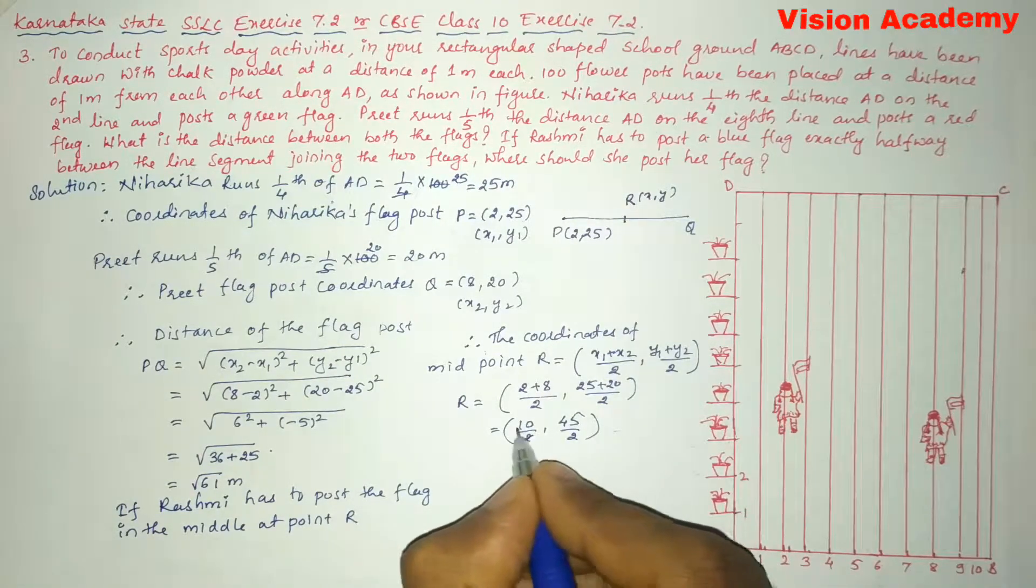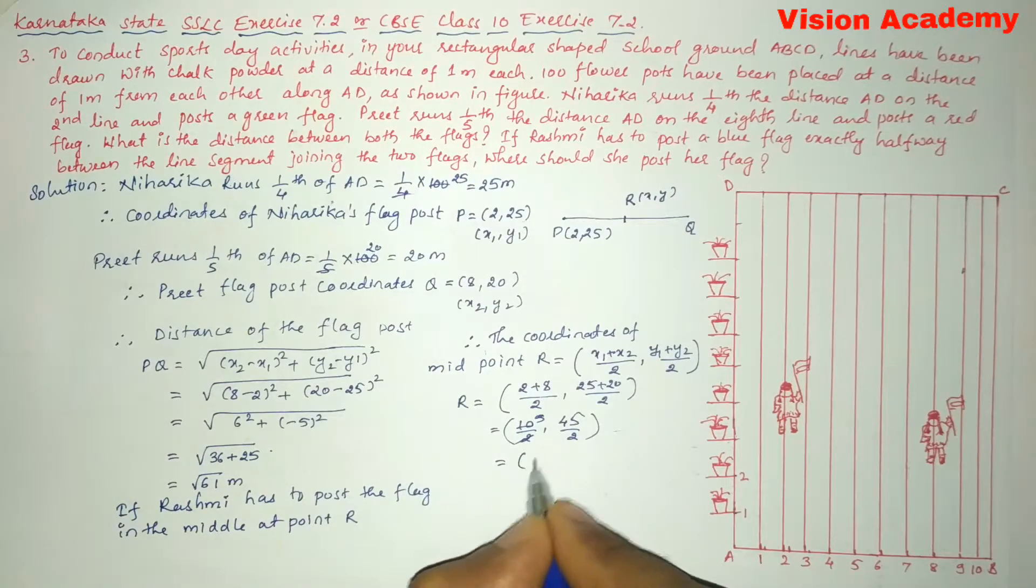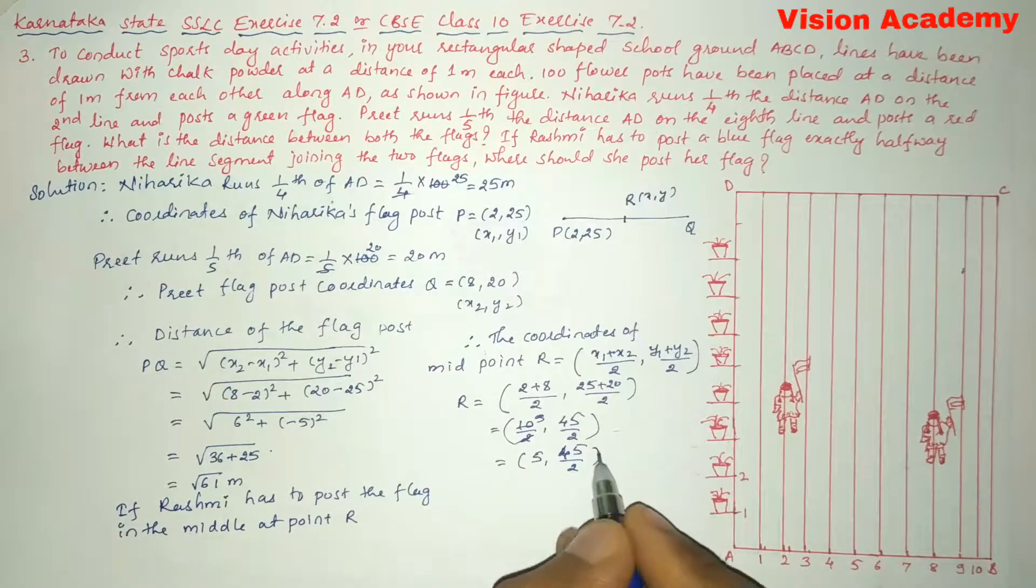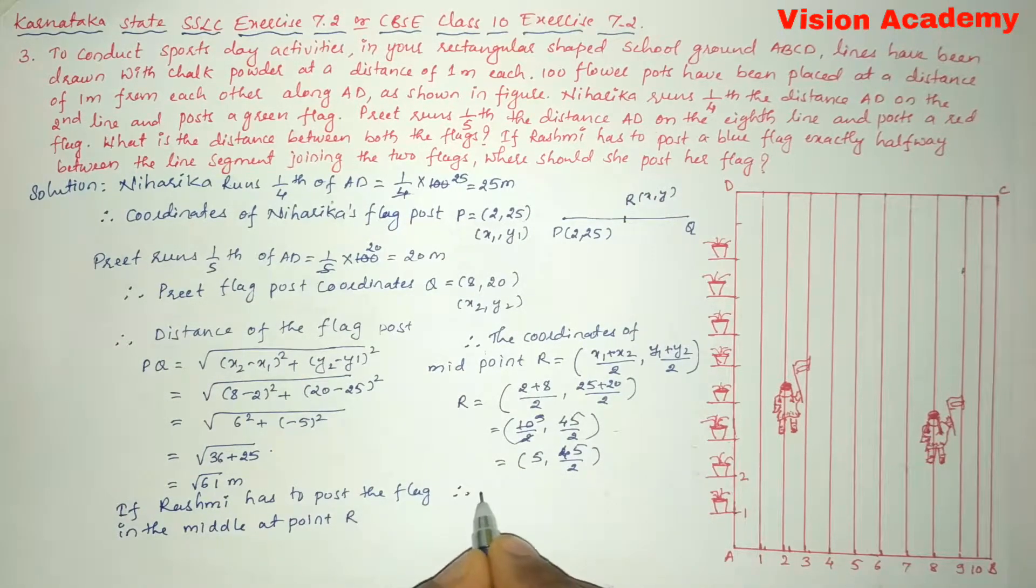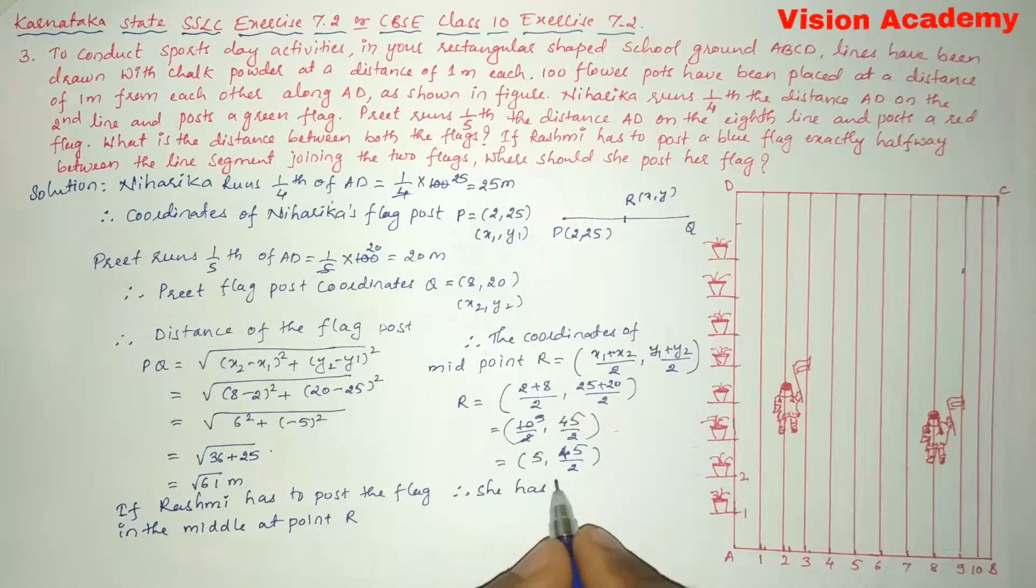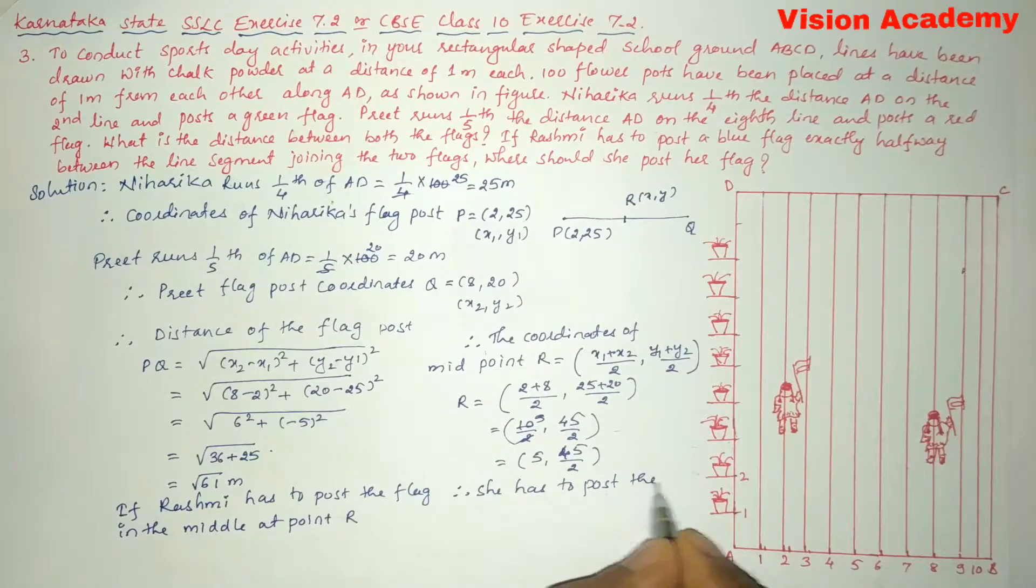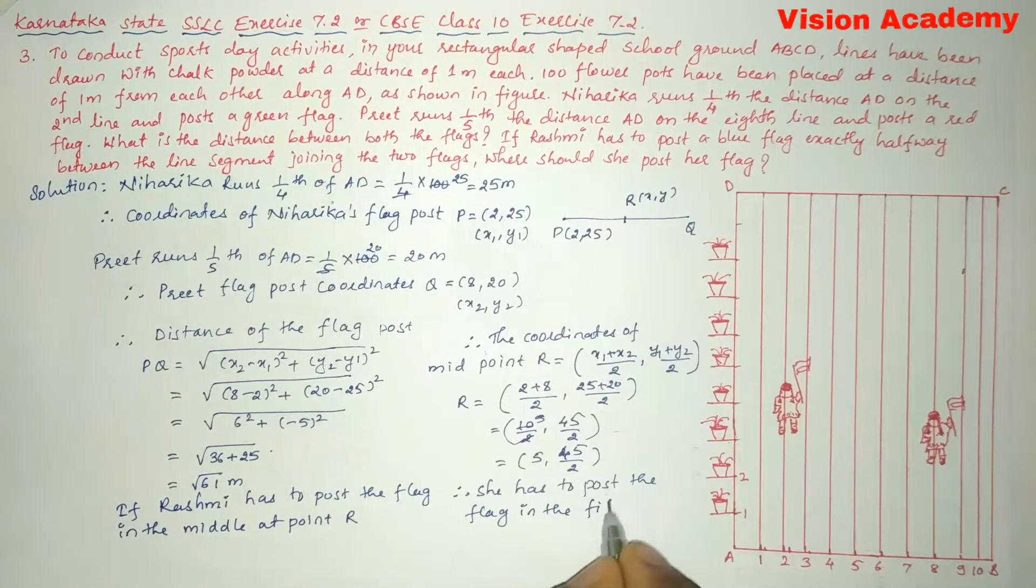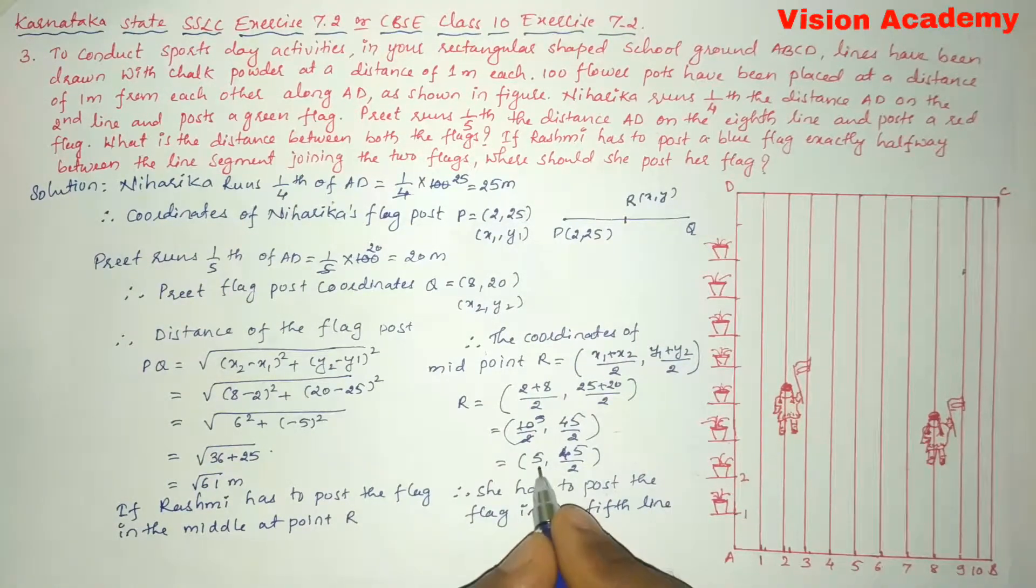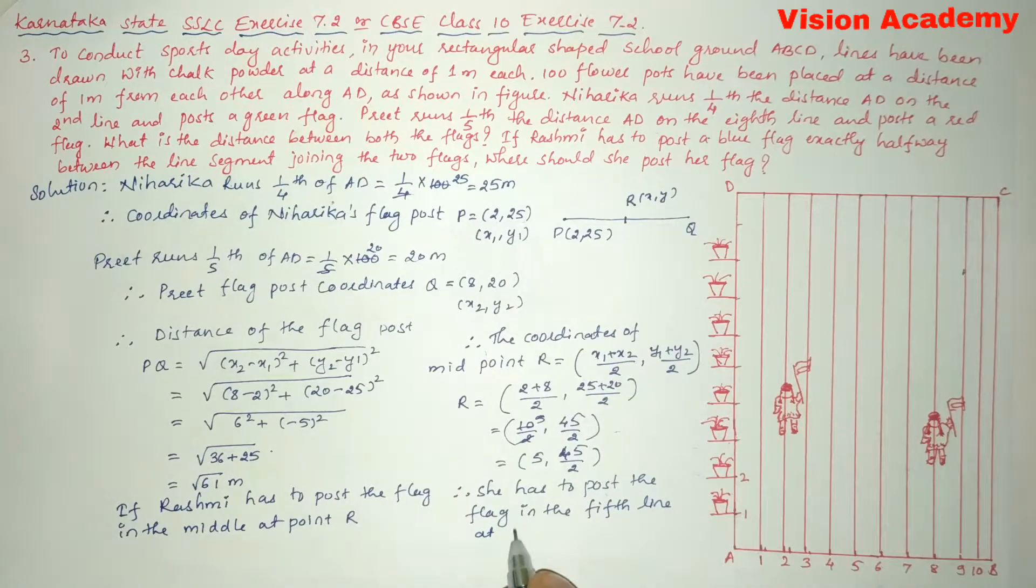So here 2 plus 8 is 10, divided by 2 is 5. And 45 divided by 2 is 22.5. So here it is (5, 22.5). Therefore she has to post the flag in the fifth line at 45 by 2, that is 22.5 meters.